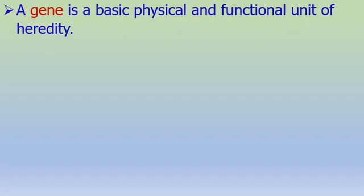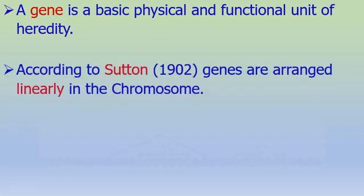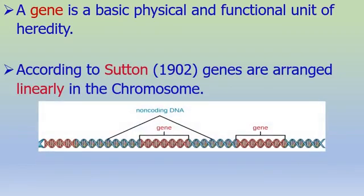A gene is a basic physical and functional unit of heredity. Each gene is both a physical structure and a functional unit. Genes are arranged linearly in the chromosome, and chromosomes contain genes — genes are present in the chromosomes.